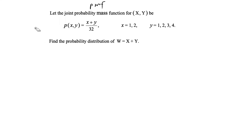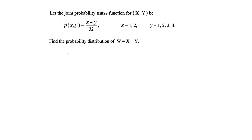Basically, w is a discrete random variable made up of the sum of two other discrete random variables x and y. We're given the joint PMF of x and y and we have to find the probability distribution of w. This is a problem where we have to find the probability distribution of a discrete random variable, so let's get started.